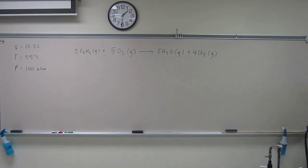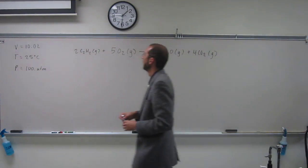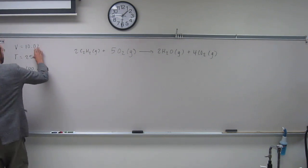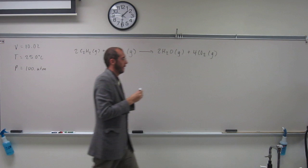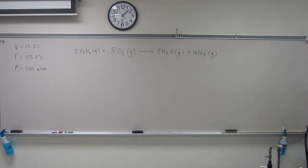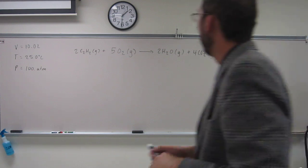If you have a 10.0 liter tank of acetylene at 25.0 degrees Celsius and 100 atm of pressure, how much carbon dioxide will you form if you burn all the acetylene in the tank?